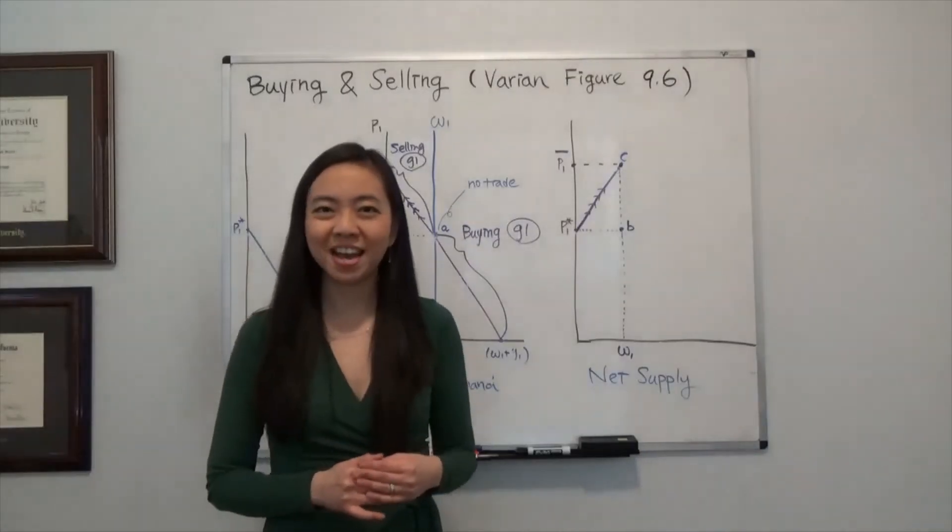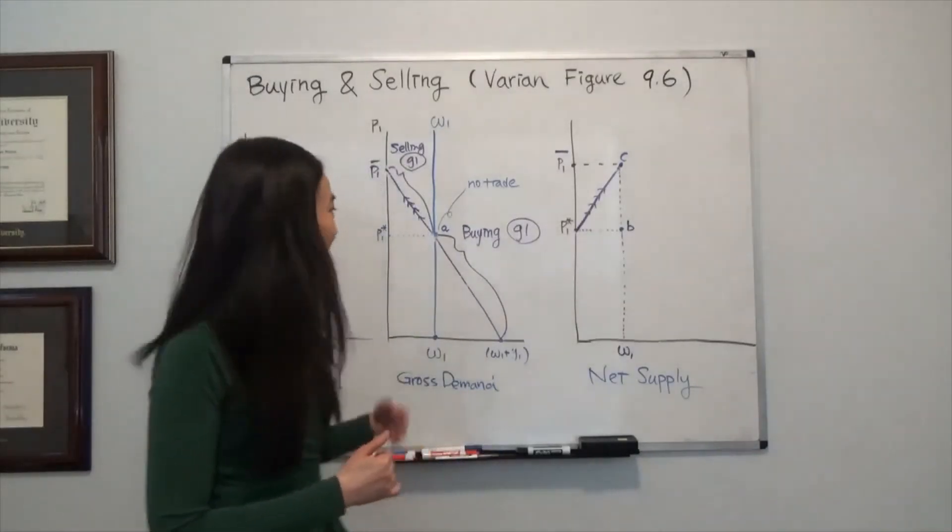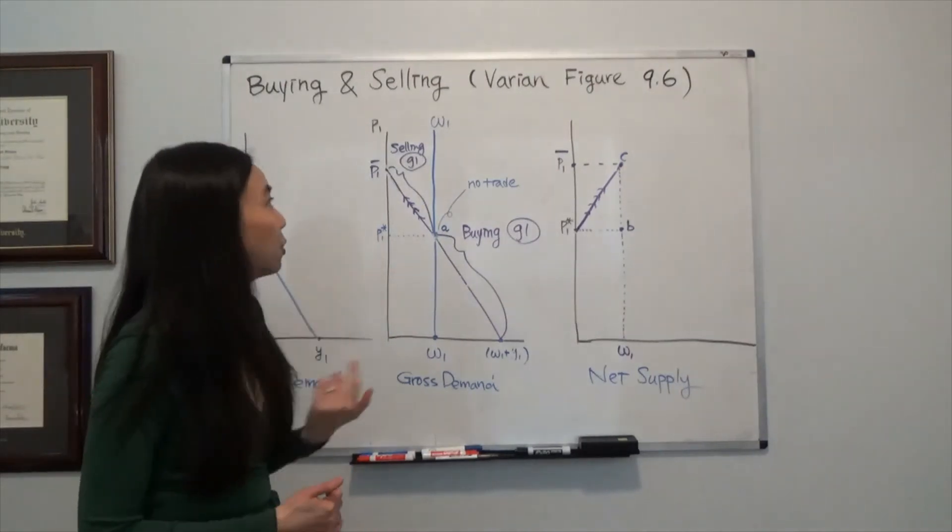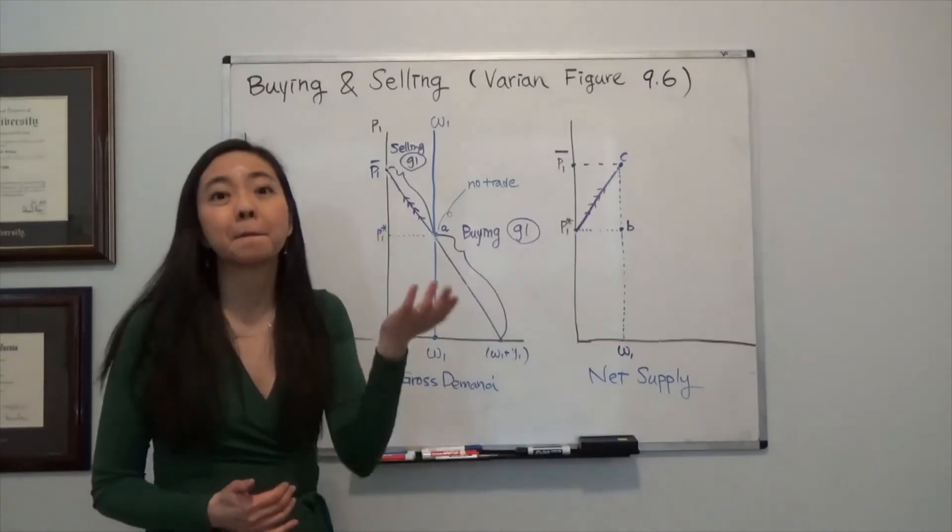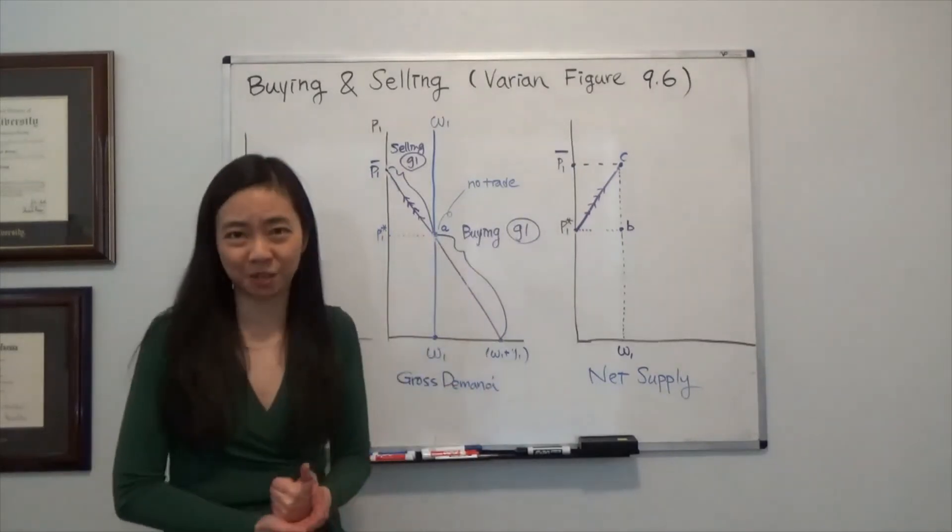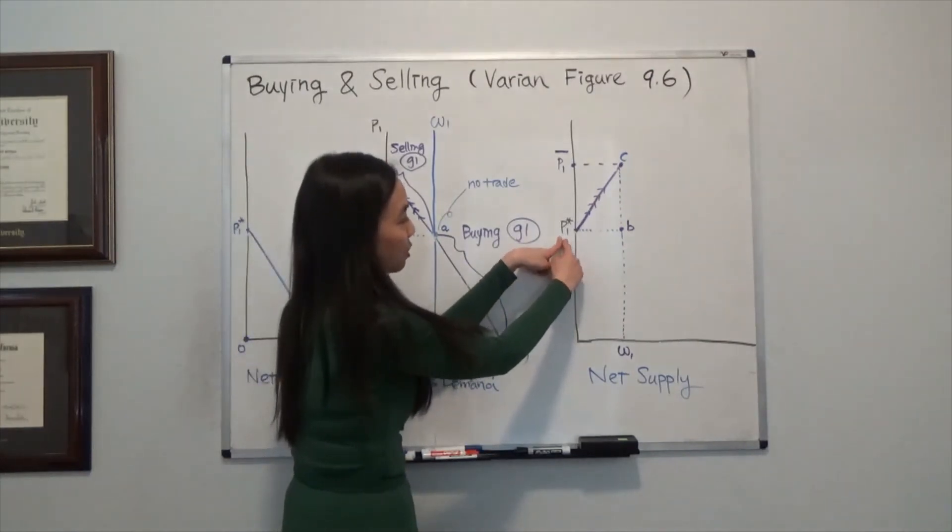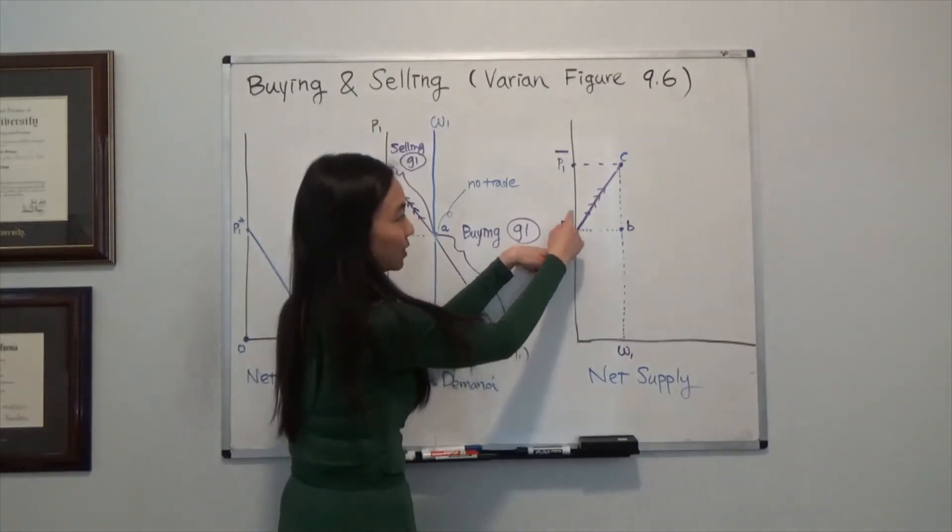Now you'll be asking, what happens if my price of Good 1 goes higher than P1 star? Well, in that case, we're going to start to sell our Good 1 by cutting my consumption of Good 1. So what we'll do is here, look, when the price of Good 1 is still P1 star, then I'm supplying zero unit of Good 1. But if the price goes higher than that, I'm going to start to sell my Good 1.